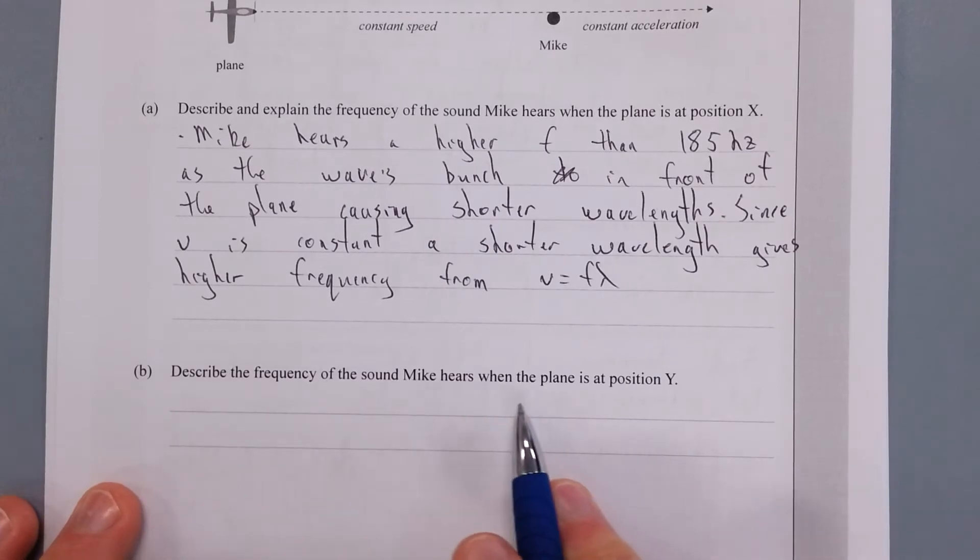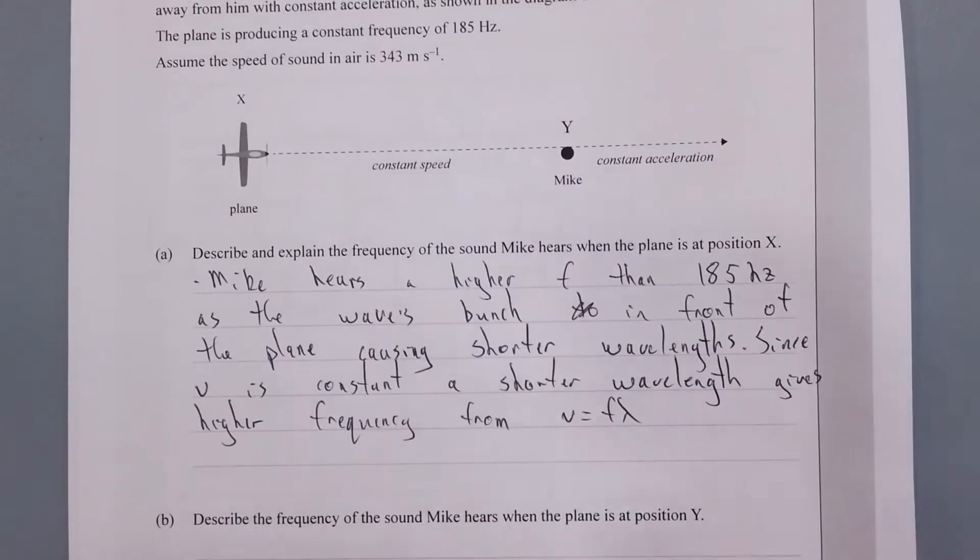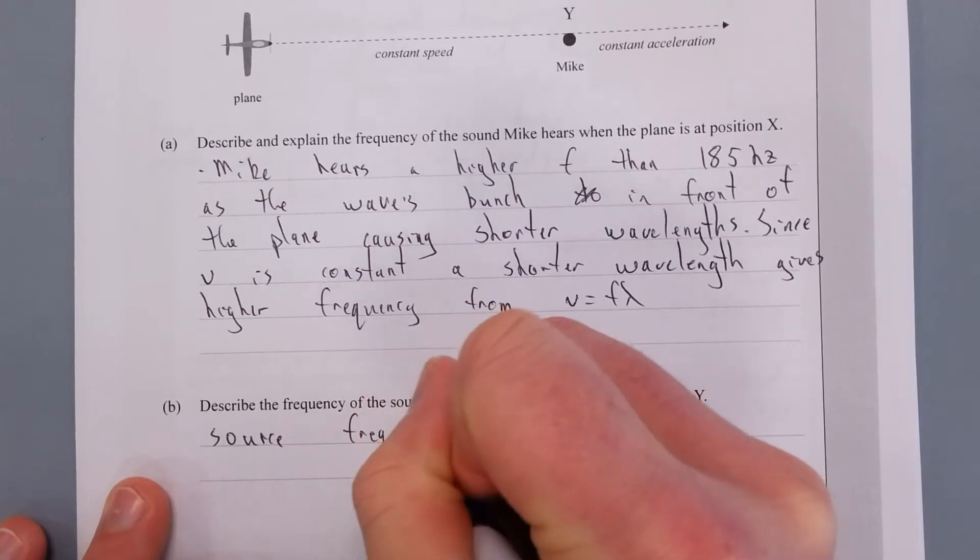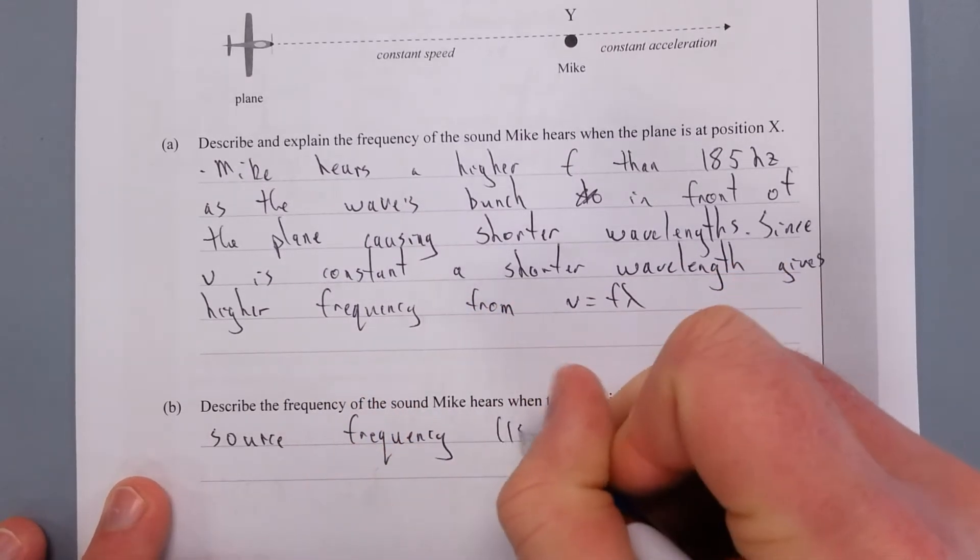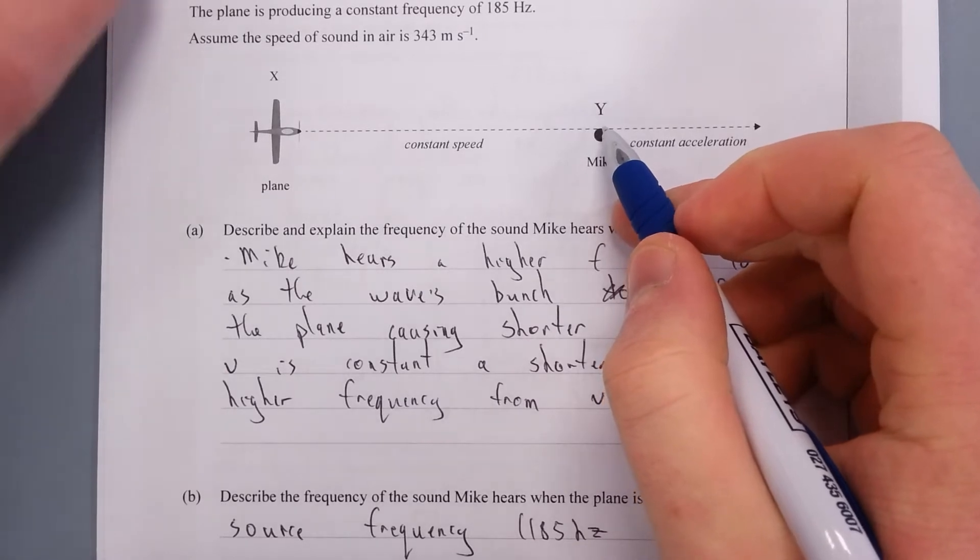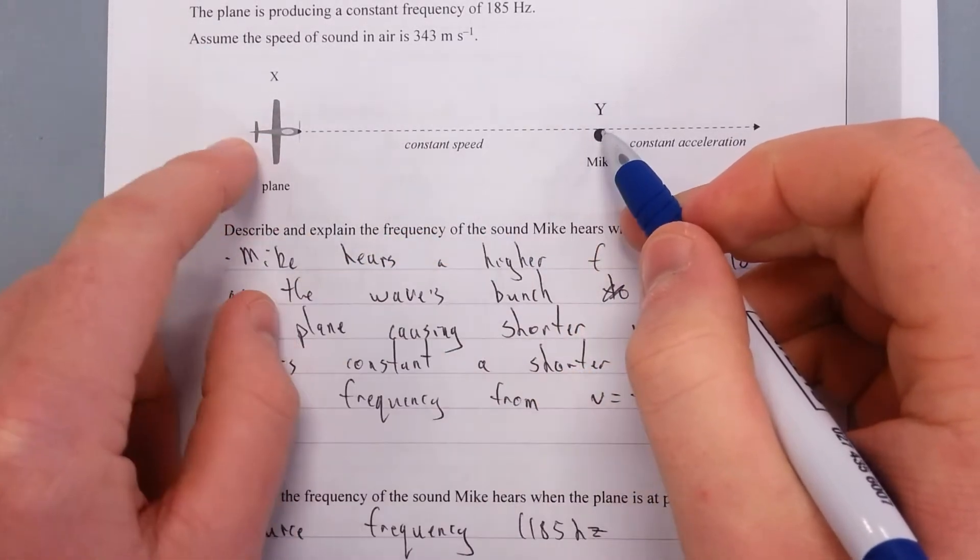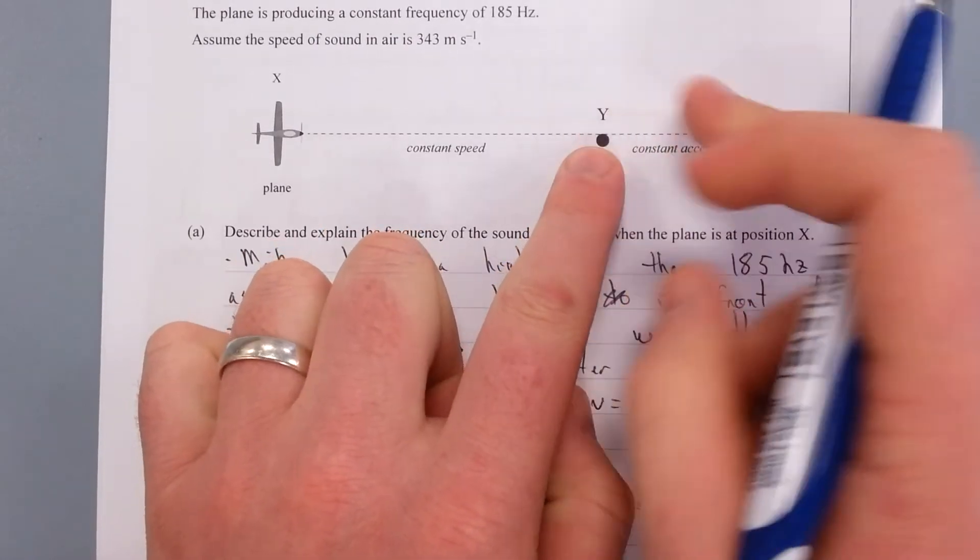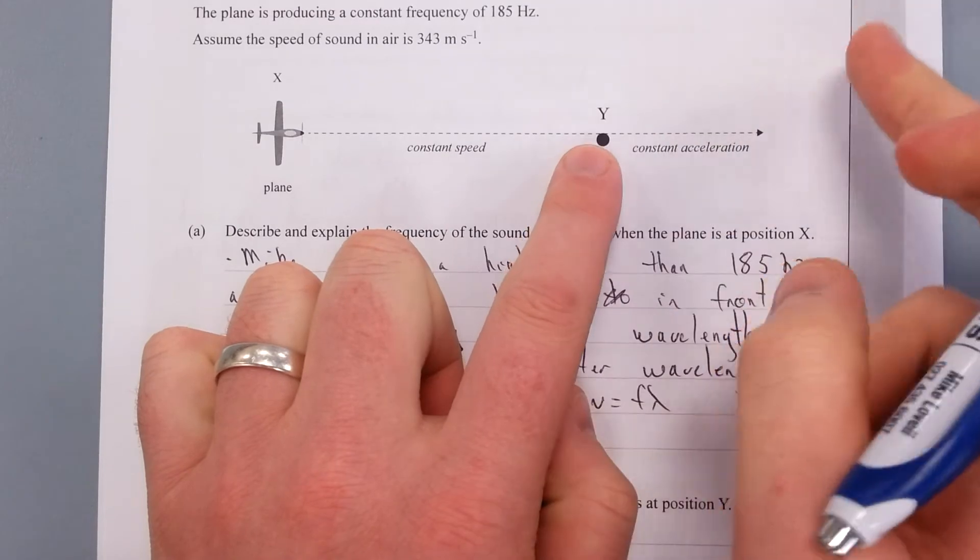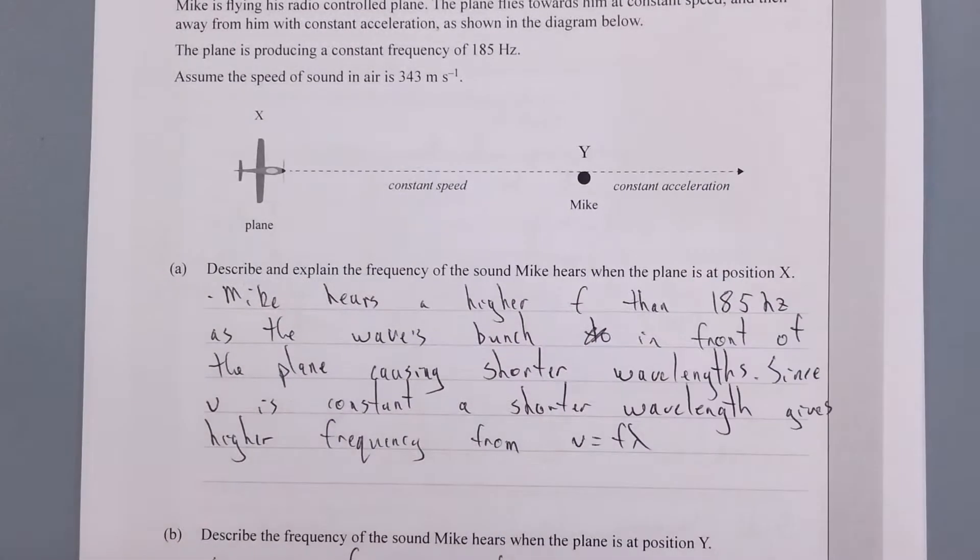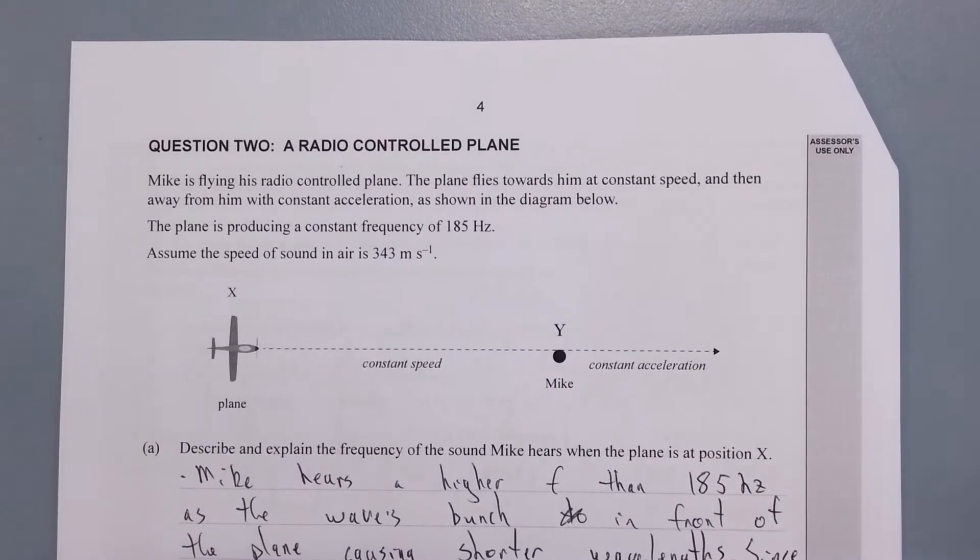Describe the frequency of the sound Mike hears when the plane is at position Y. He's going to hear the source frequency. I don't need to dress that up at all. Source frequency, 185 Hertz. And that is because when he's at position Y, there's no relative velocity between Y and the plane for that instant in time. At point Y he's going to hear the source. And that's just what you hear. So when cars come past, when they're exactly at your position, you hear the source frequency.